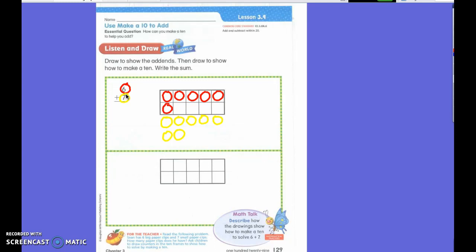So what could I do to make it a little bit easier for myself? So that I can figure out what six plus seven is a little bit quicker, a little bit easier for me. What could I do?